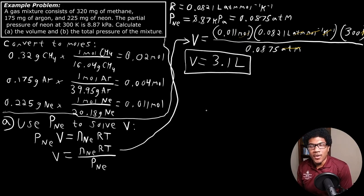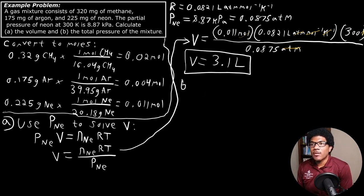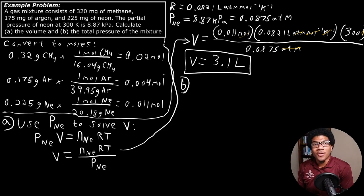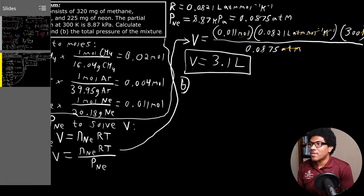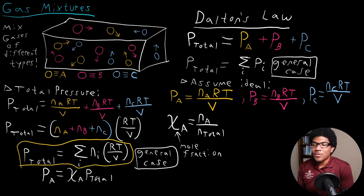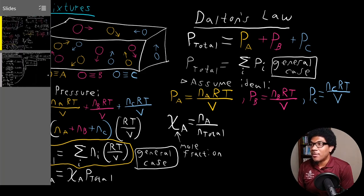That's the answer for Part A: a volume of 3.1 liters. For Part B, one approach would be to calculate individual partial pressures for CH₄ and argon and sum them up. But alternatively, we can use the general equation P_total = (sum of moles) × RT/V directly, without solving each partial pressure individually. All we need is the total number of moles, which we already have.